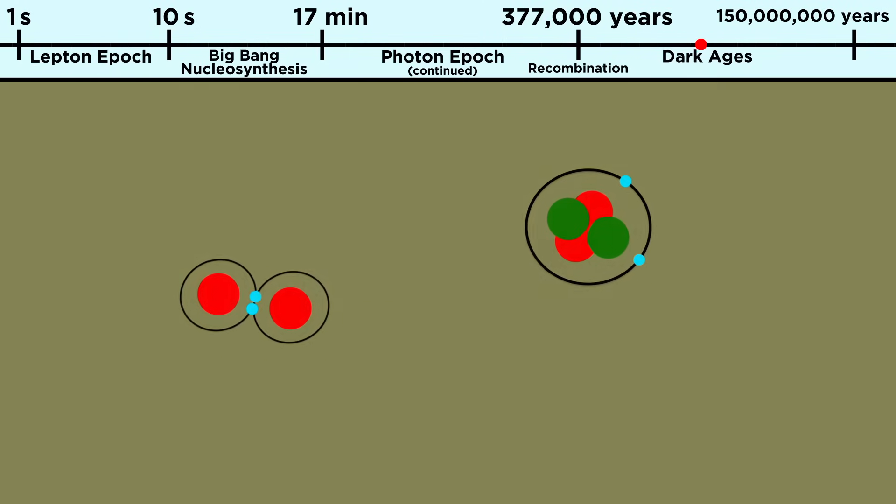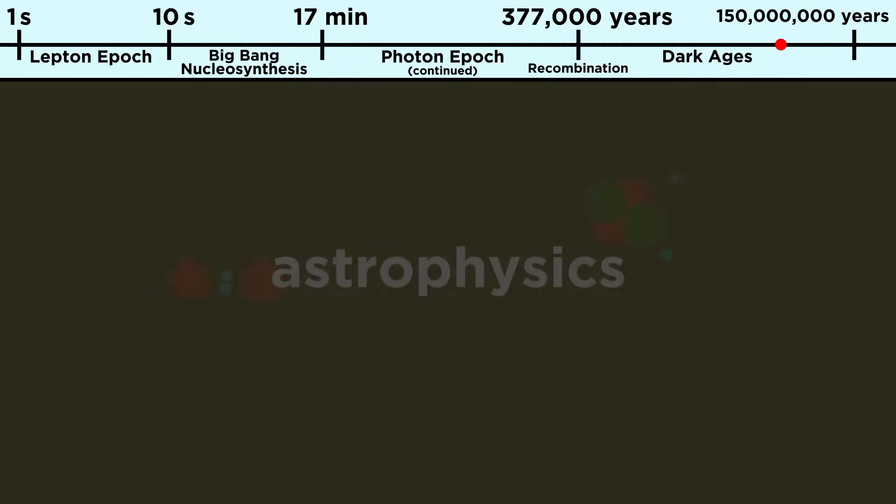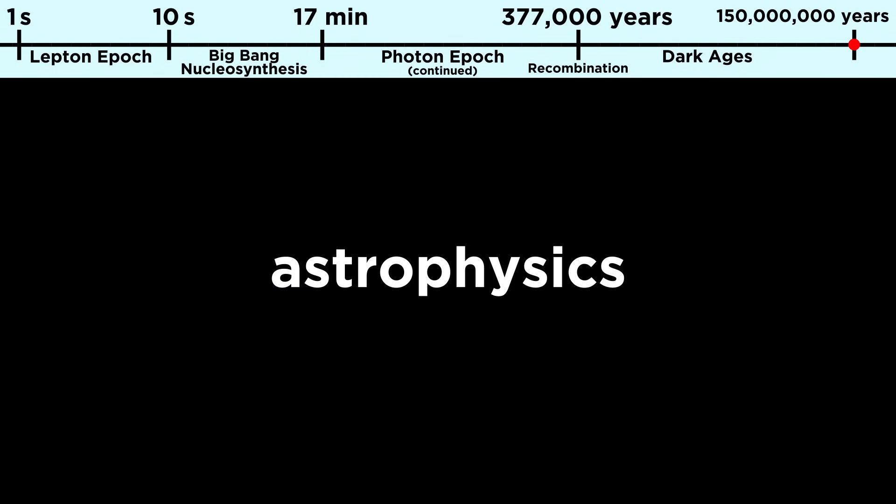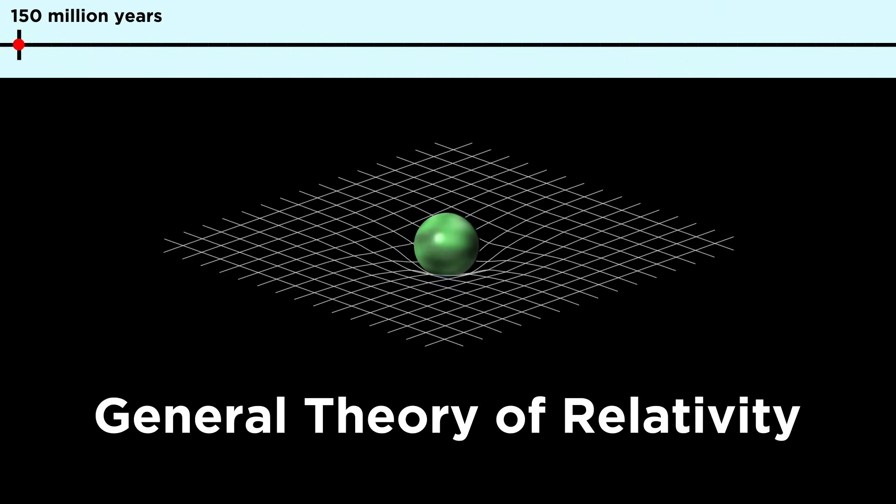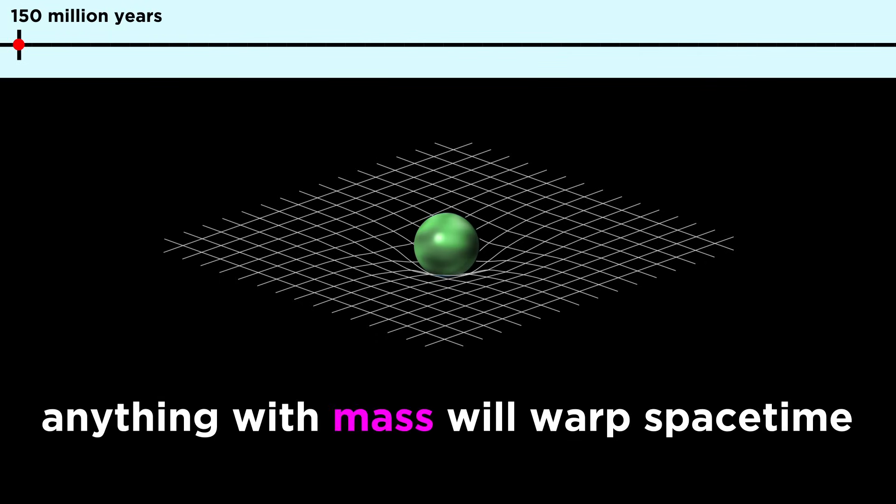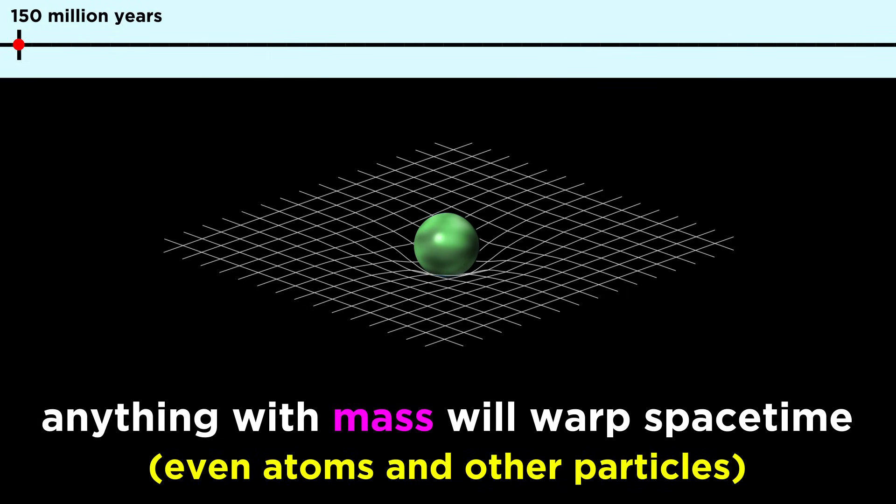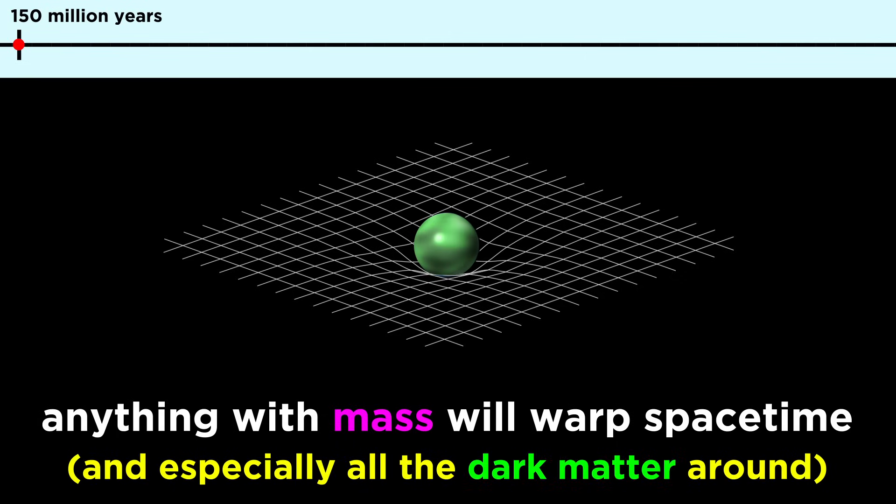Now it's time to dip into some astrophysics so we can describe what happened to these particles next. As we learned in modern physics from Einstein's general theory of relativity, objects with mass warp spacetime, inducing a curvature that attracts all massive objects to each other. Even though the matter in the universe consisted only of tiny atoms at this time, these still exert gravity, as did all the dark matter lying around, which we will get to later in the series.